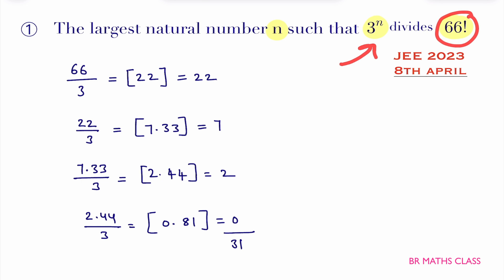Try to understand: the 66 factorial is there. Now in this, 2^ something will be there, 3^ something will be there, 5^ something will be there. 3^ what number you will get means 3^?